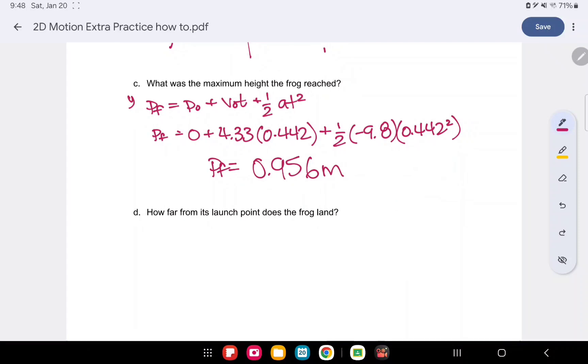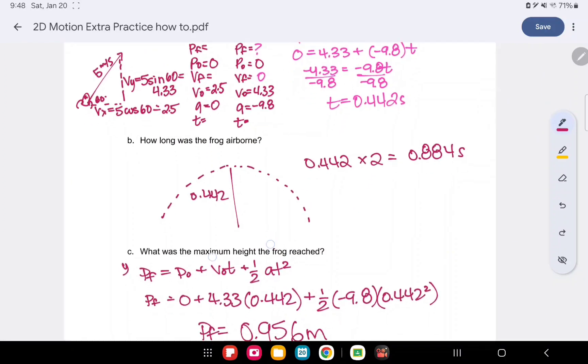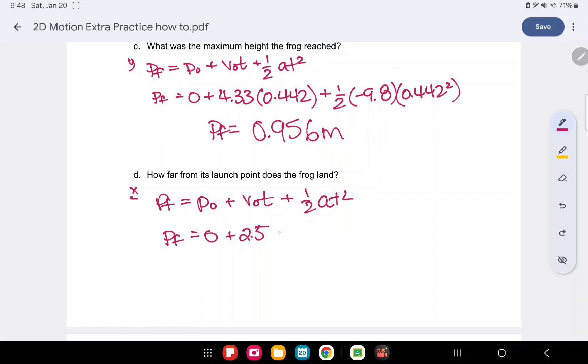How far from its launch point? So we're going for our x pf now. So pf equals p0 plus v0t plus 1 half at squared. We're looking for our final x. We know it started at 0. We can look back and know that it was 2.5. And the full length of time from x0 to xf will be 0.884 rather, double the time, plus a 0 acceleration. So 0 times 1 half times t is still 0. So we use our pf is 2.5 times 0.884, which gives us 2.21.